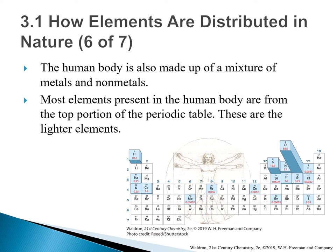The human body is also made up of a mixture of metals and non-metals. The most elements present in the human body are from the top portion of the periodic table — these are the lighter elements. The most abundant elements in human bodies are oxygen, followed by carbon, then hydrogen.